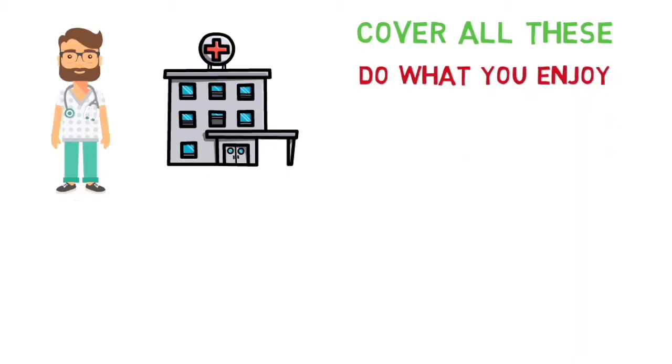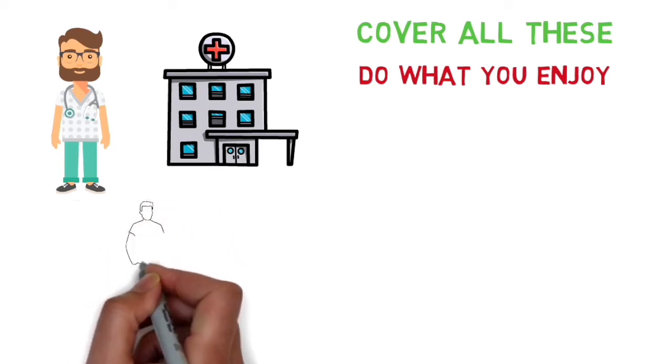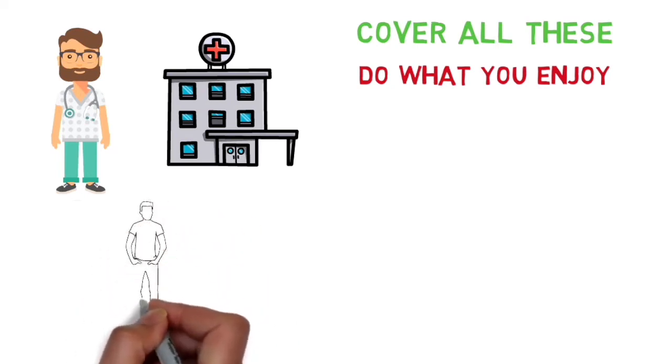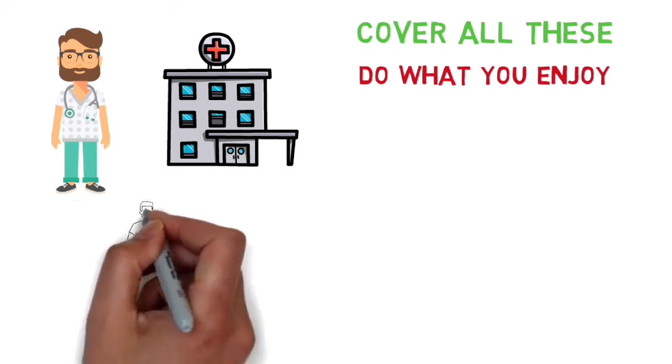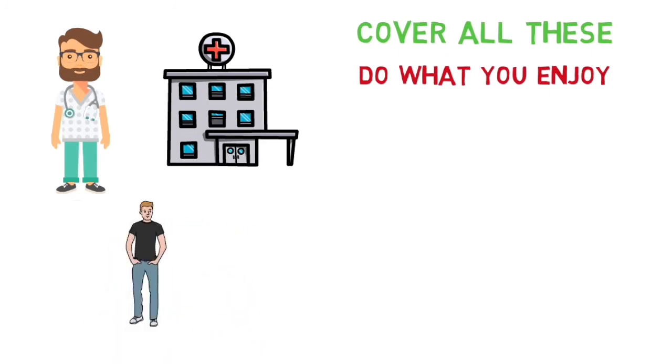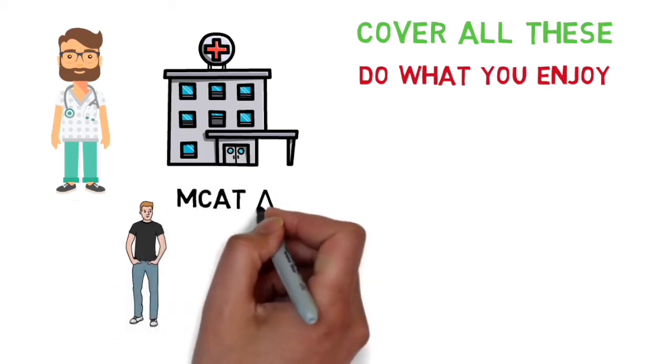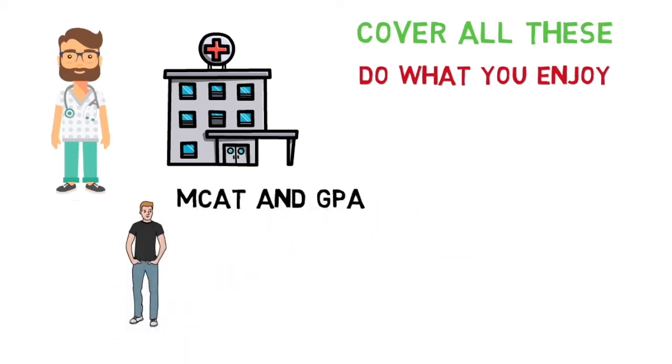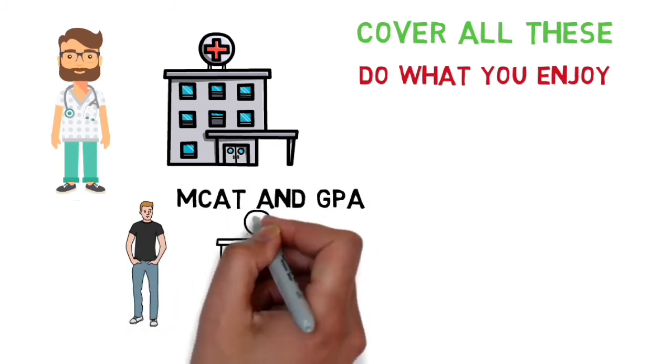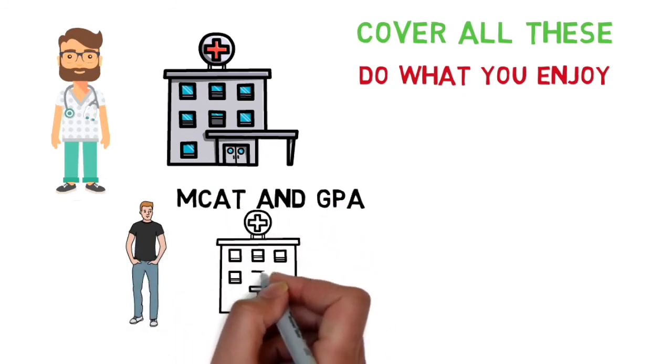This doesn't mean just do one thing in each of these categories and you're all set. You should aim to do more extracurriculars on top of this stuff that don't necessarily have to be part of any category, but rather are individual to you and show off your personality. Cover these bases by doing multiple things within each category as long as you're not spreading yourself too thin. Just remember that the most important thing in your pre-med years is your MCAT and your GPA because those are the things that get your foot in the door in the first place.